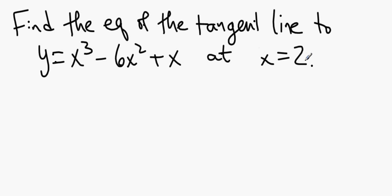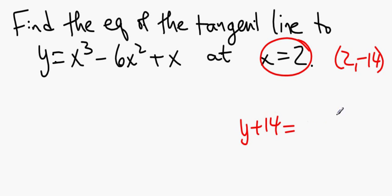At the point where x equals 2, that's fairly straightforward. I know that's going to be (2, something). Turns out that something is -14. And so I know the equation of the tangent line is going to be y - y₁ = slope times (x - x₁). I just don't know what the slope is yet.